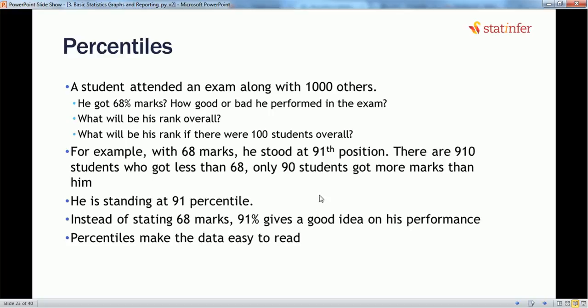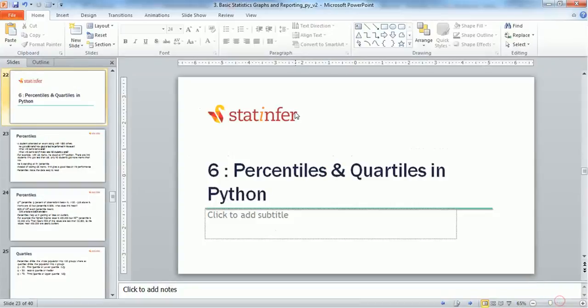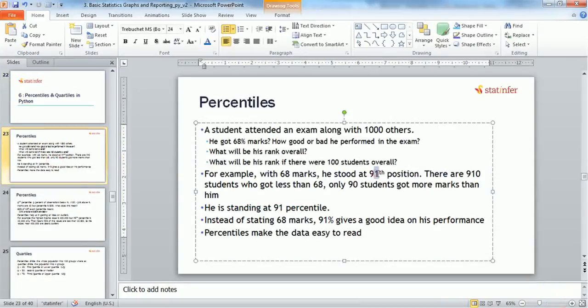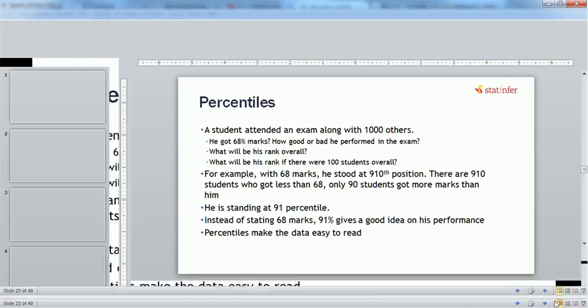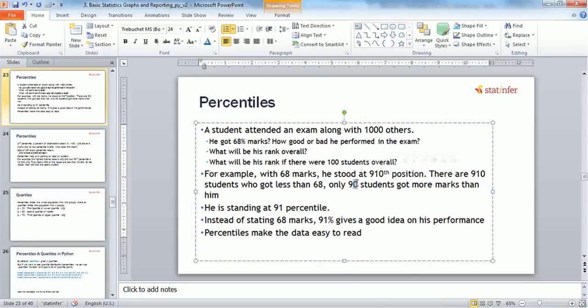So to do so, if we try to fit it on the scale, imagine this guy stood at 910th position. What does this mean? The student at 910th position means that there are 910 students who got less than 68% marks. Only 89 students got more marks than this guy.